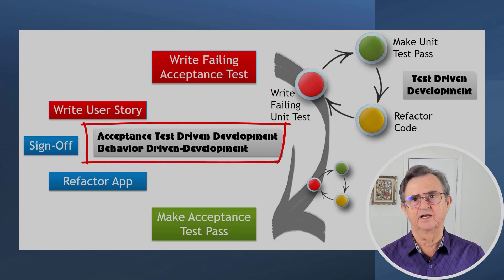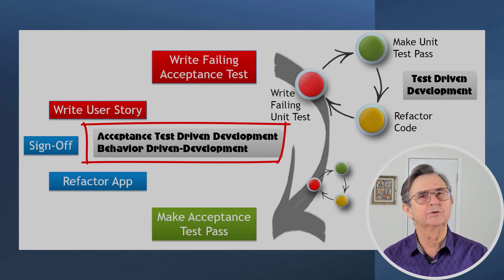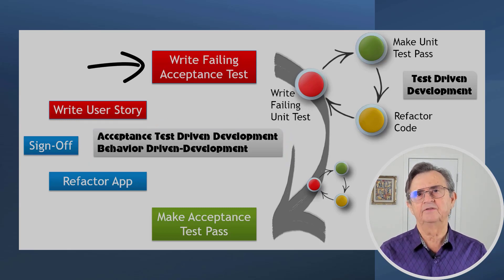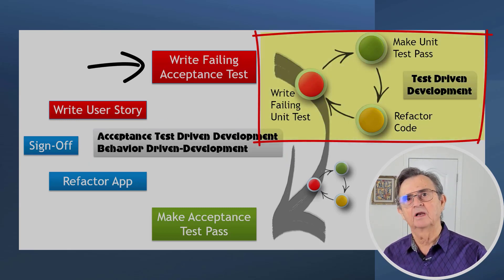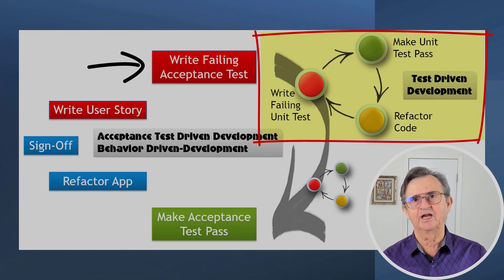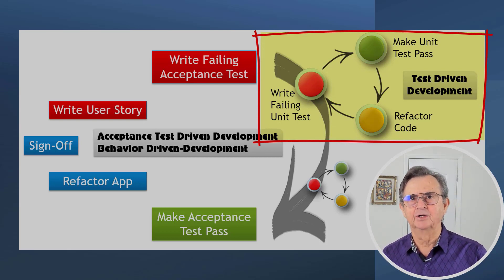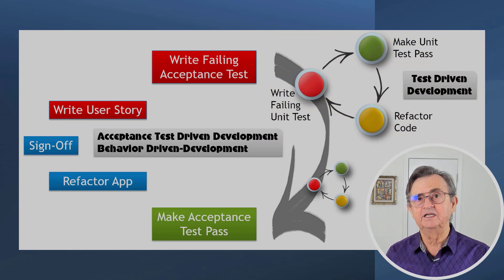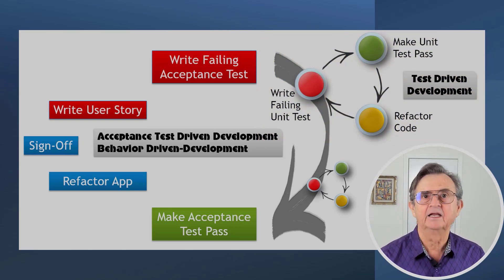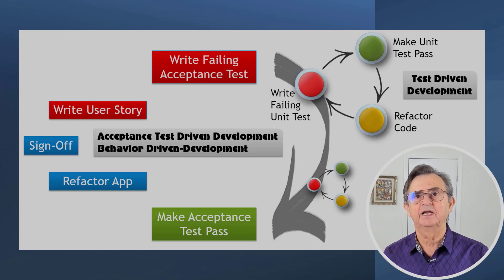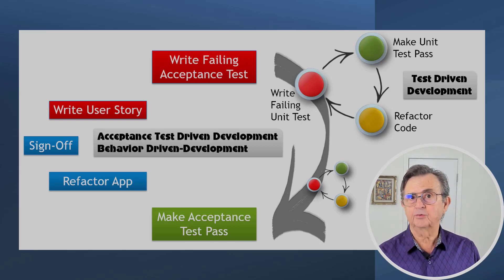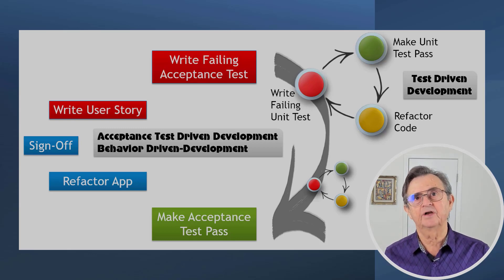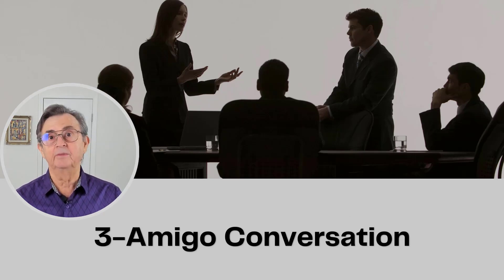ATDD, Acceptance Test Driven Development, also known as BDD or Behavior Driven Development, represent a significant change in thinking. They require the development of acceptance test scenarios before developers write a line of code for the application. Examples and scenarios are the actual requirements from the developer's point of view. ATDD and BDD require the business or customer side team and the technical team to collaborate on developing acceptance tests. Collaboration in creating these tests is critical to ensure that all the different aspects and perspectives are covered. These joint discussions often take place during a three-amigo conversation.